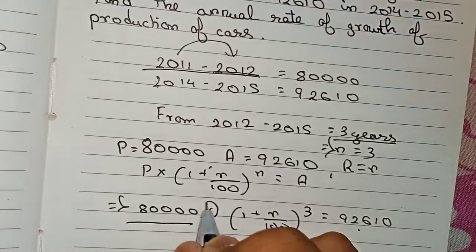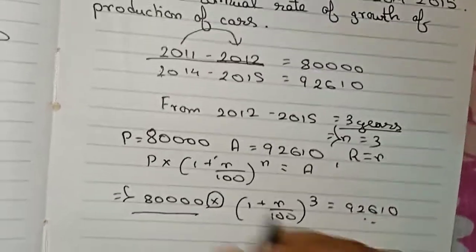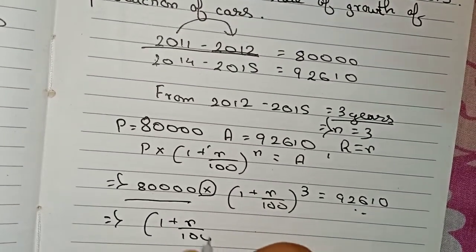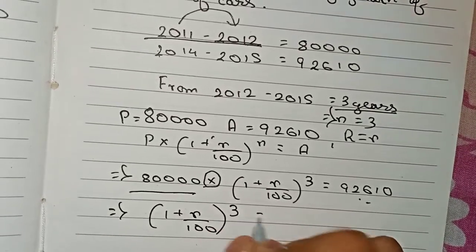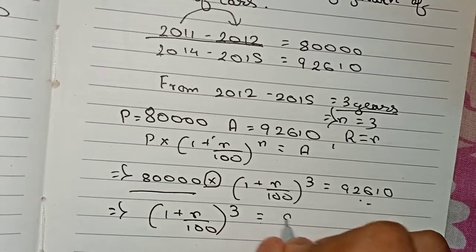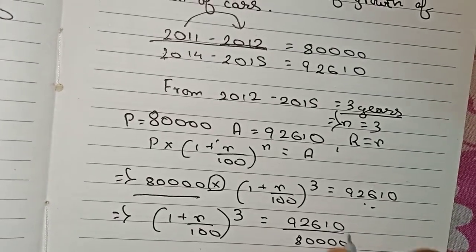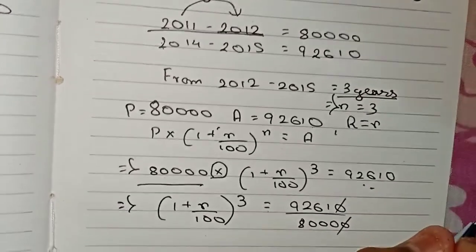So now you take this 80,000 to the side. As it is in multiplication here, it will go for division on the other side. So now (1 + r/100)³ will equal 92,610 divided by 80,000. So I cut the zeros.